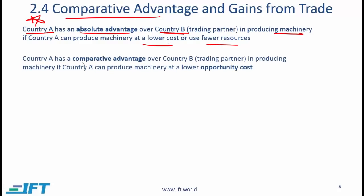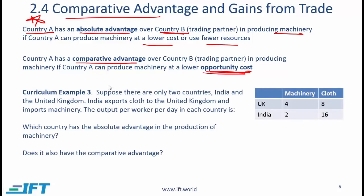What about comparative advantage? Country A has a comparative advantage over country B in producing machinery if country A can produce machinery at a lower opportunity cost. The critical difference between these two statements is this phrase 'opportunity cost,' and to understand opportunity cost let's look at example 3 in the curriculum.